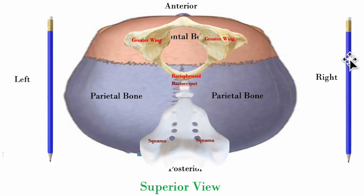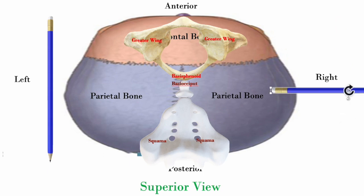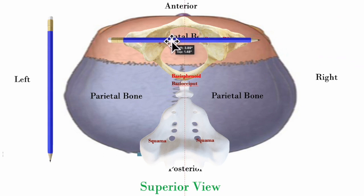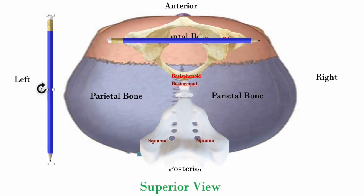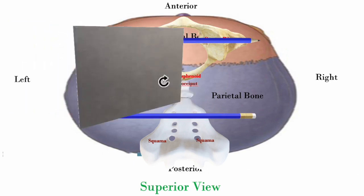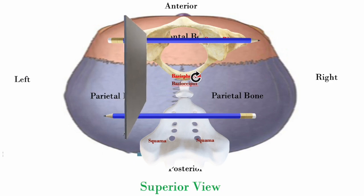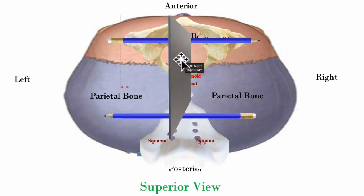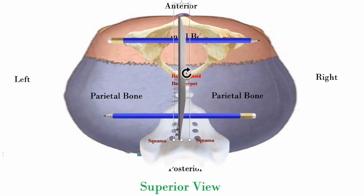Now let's get into the axes. The axes for flexion and extension of the sphenoid and the occiput are transverse or horizontal. The one for the sphenoid is right over the body of the sphenoid, and the one for the occiput is the foramen magnum. They move in a sagittal plane.